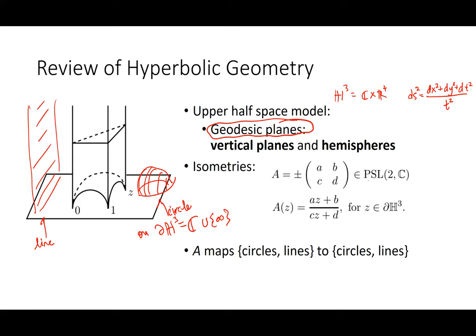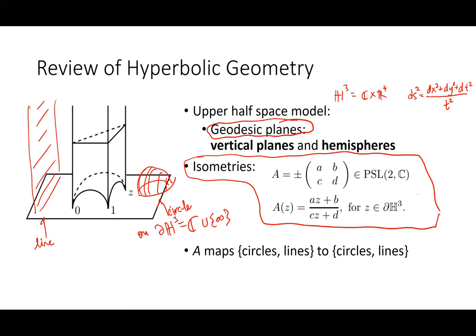The isometry group — at least the orientation-preserving isometries — is the group PSL₂(ℂ): two-by-two matrices with complex entries, determinant one (AD minus BC equals one), up to plus or minus. These act on the boundary by standard Möbius transformations from complex analysis: A applied to z gives (Az + B)/(Cz + D). A key point is that these isometries take circles and lines to circles and lines in the extended complex plane.